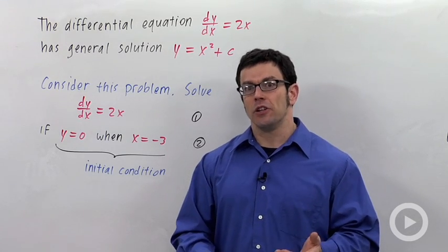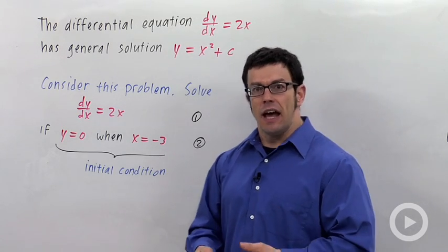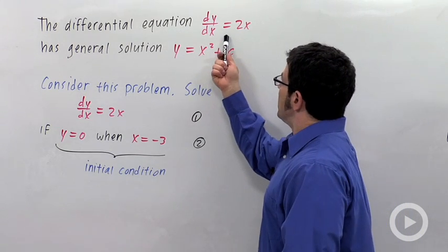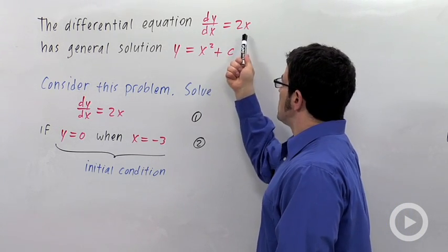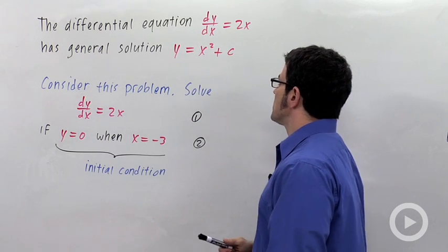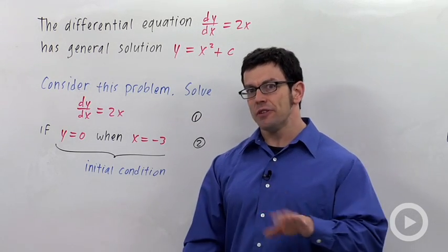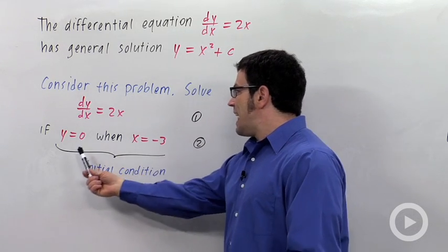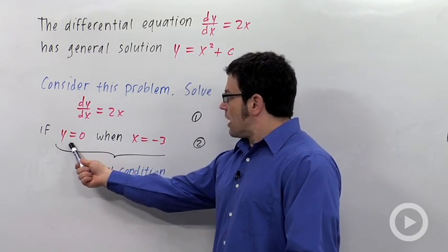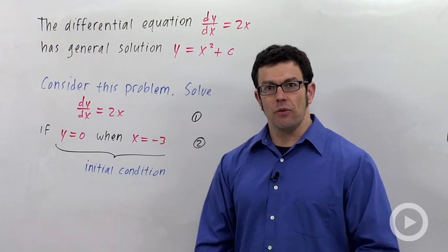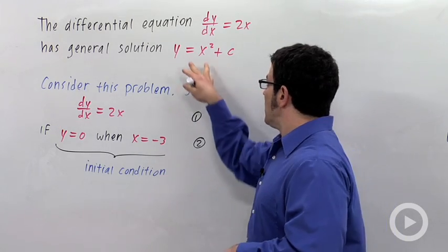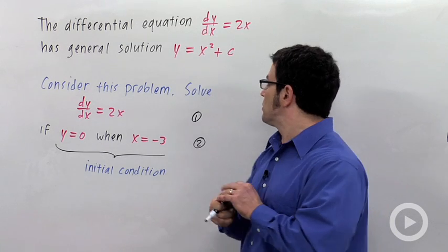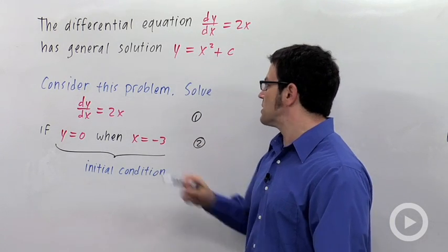A differential equation has many solutions, and many solutions can sometimes be written in a single form called a general solution. We had dy/dx equals 2x with general solution y equals x squared plus c. But there's another type of problem where you're given a differential equation and an initial condition — for example, y equals 0 when x equals negative 3. This can help narrow it down among all the general solutions to one particular solution that passes through this point.